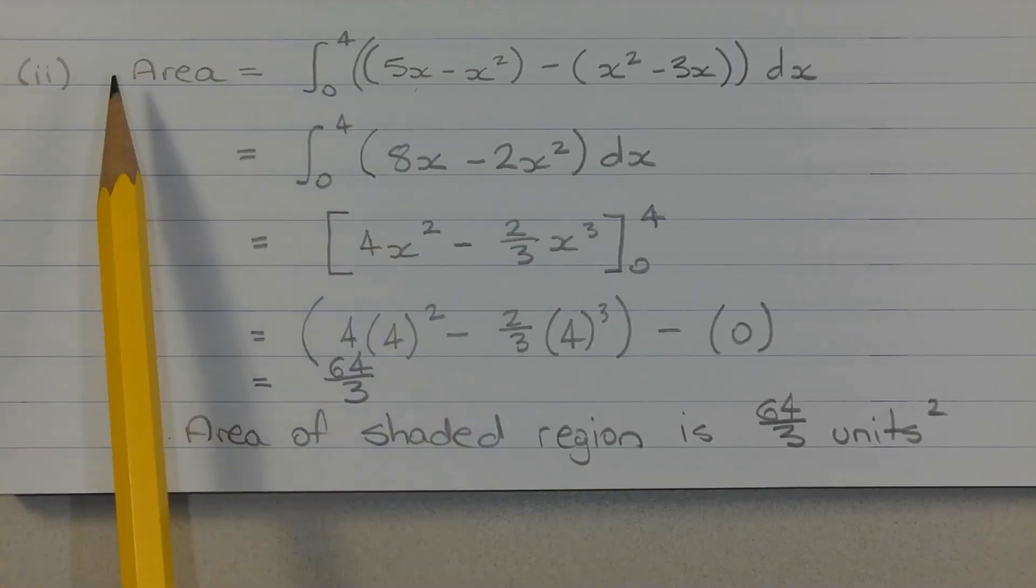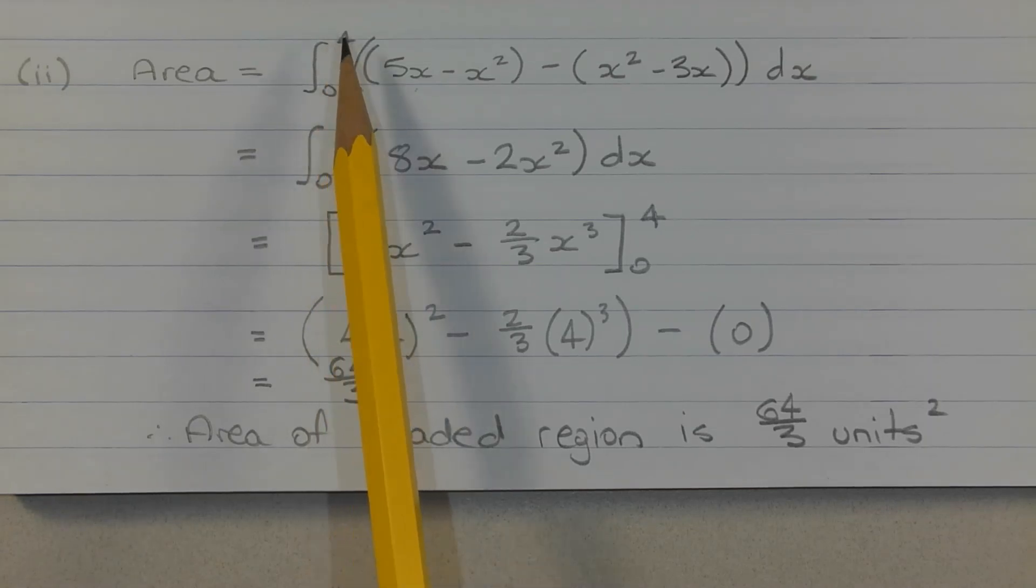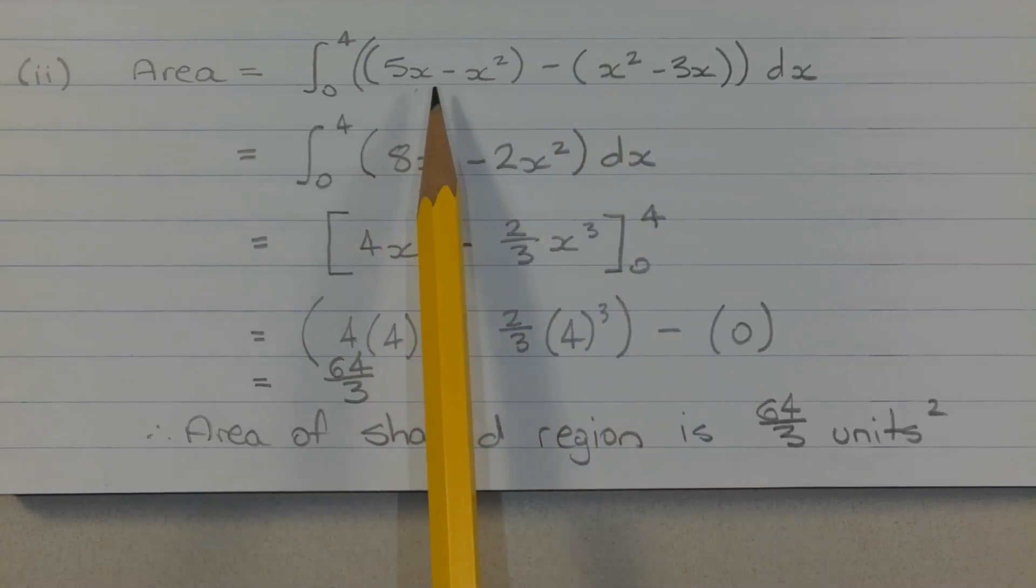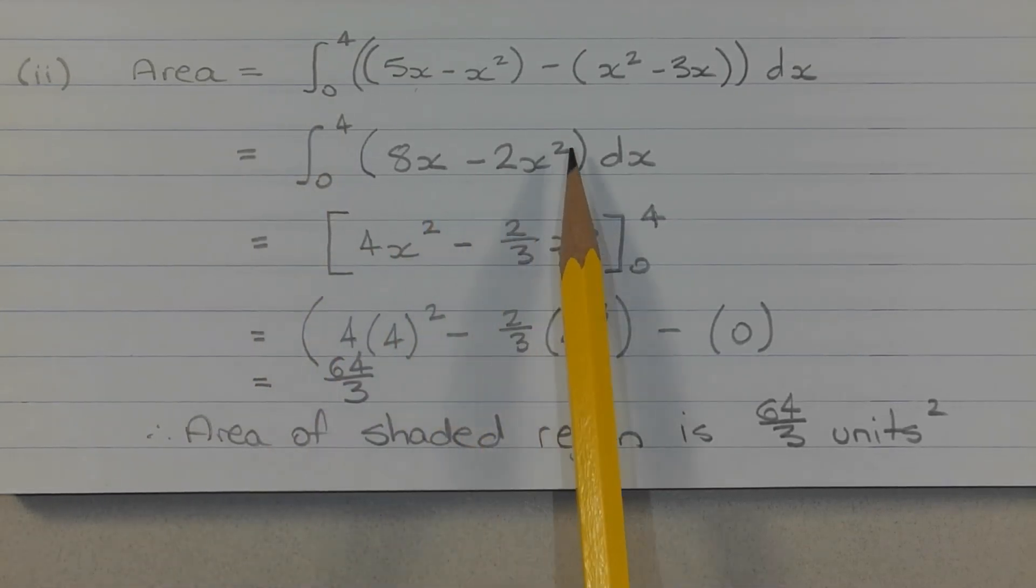So the area can be found by finding the integral from x equals 0 to x equals 4 of the concave down parabola minus the concave up parabola. That is 5x minus x squared in brackets minus x squared minus 3x in brackets dx. Now expanding the brackets and collecting like terms, the area is given by the integral from x equals 0 to x equals 4 of 8x minus 2x squared dx.